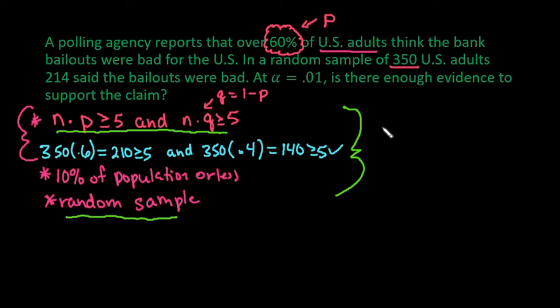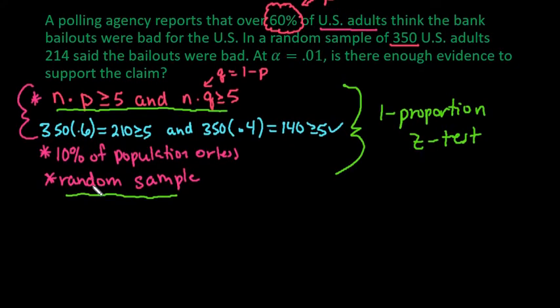So with this, these are the conditions for what is known as the one proportion z test. So that is the name of the test that we would use. So you would say, since all of our assumptions and conditions are met, we can use the one proportion z test. And after we determined what kind of test we need, we have to write our null and our alternative.